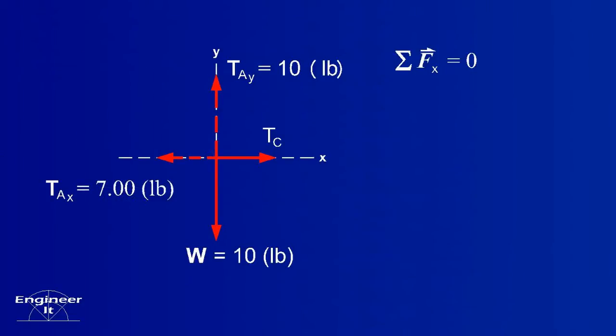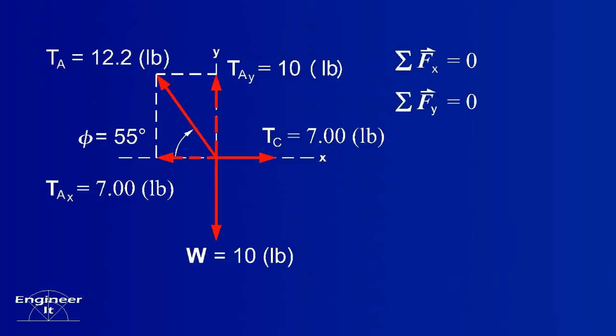Now we can see that tension C must be equal and opposite of the X component to maintain equilibrium. So tension C must equal seven pounds. Both forces have been found so it looks like we are done here.